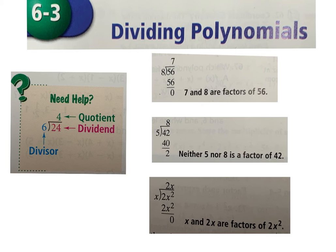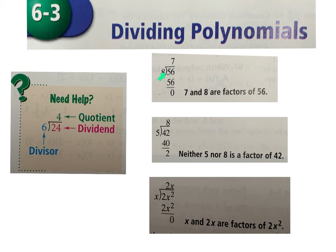Look at the example of 56 divided by 8. 56 is divisible by 8, so we ask how many times can 8 go into 56? That's 7, because 7 times 8 is 56. You subtract and get 0, which tells us 7 and 8 are both factors of 56, since the remainder is 0.